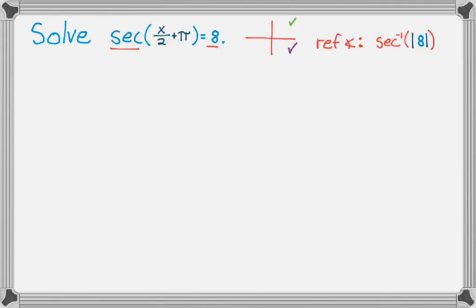If you wanted to, you could also say the inverse cosine of 1/8, but I don't want to, so I'm not going to. All right, and now this is one of those scenarios where we have a thing in a box.